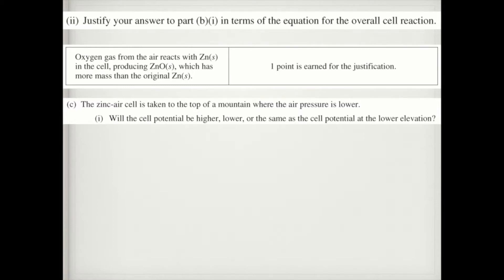In part C, it asks, the zinc air cell is taken to the top of a mountain where the air pressure is lower. Will the cell potential be higher, lower, or the same as the cell potential at lower elevation? So if you think about it, oxygen is one of your reactants. And by decreasing the air pressure, we are effectively decreasing the amount of oxygen that is reacting.